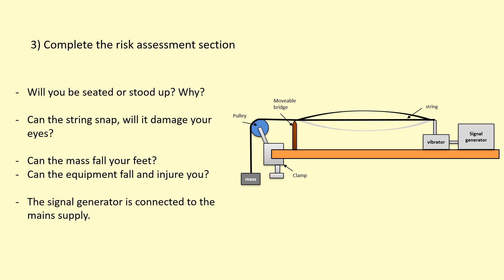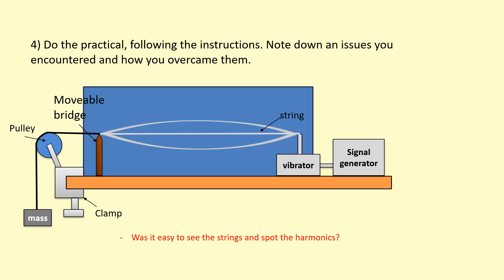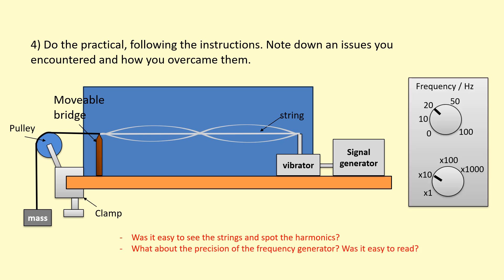Step four is to do the practical following the instructions and noting any issues encountered and how you overcame them. So for example, we used a light string in our practical and was it easy to spot? If not, one thing you could have done was use a contrasting background like so and that made it easier to see the harmonics, especially the first harmonic. Now if you can't even see the first harmonic with the background, then maybe you want to use the second harmonic. Maybe it's easier to identify the frequency at which that occurs. And then the frequency generator. So if you look at the frequency generator, the dials are not very precise. They haven't got the readings in between the 10 and 20. So when you took readings and you were probably working in groups, did you both take a reading? Did one person take a reading? Or did you both individually take one independently and then come to an agreement on what the reading was? Because this frequency generator isn't very precise.